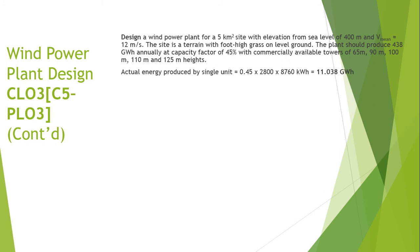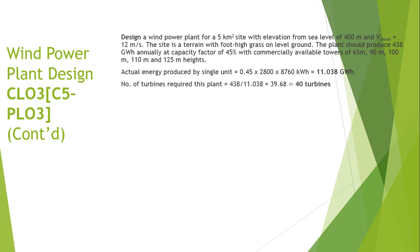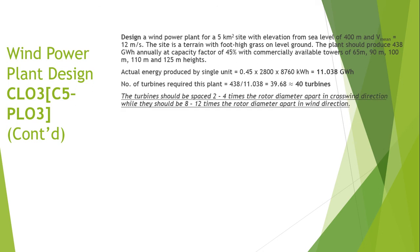The actual energy produced by a single turbine at 45% capacity factor is: 0.45 × 2800 kW × 8760 hours = 11.038 gigawatt hours per year. The number of turbines required to produce 438 gigawatt hours annually is calculated by dividing 438 by 11.038, which rounds up to approximately 40 turbines.